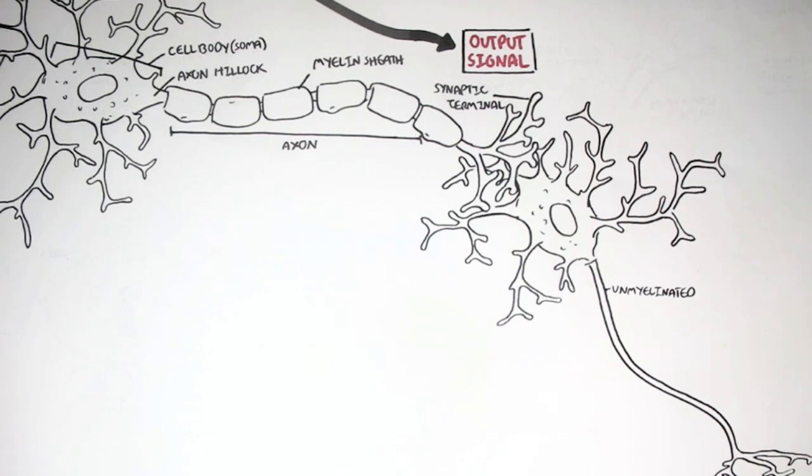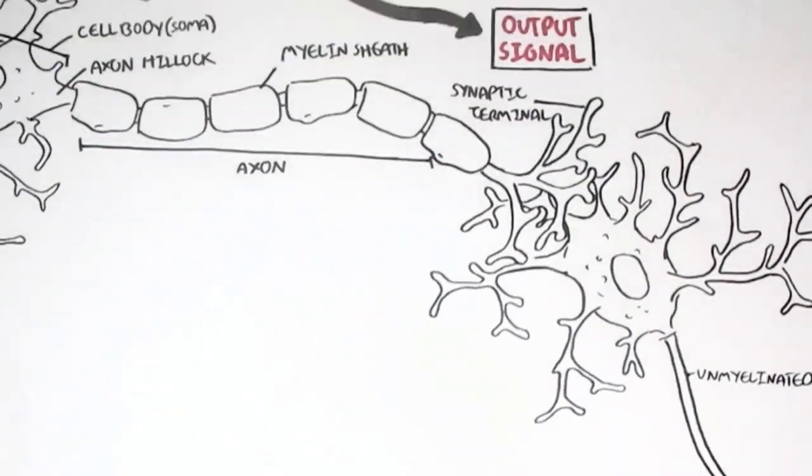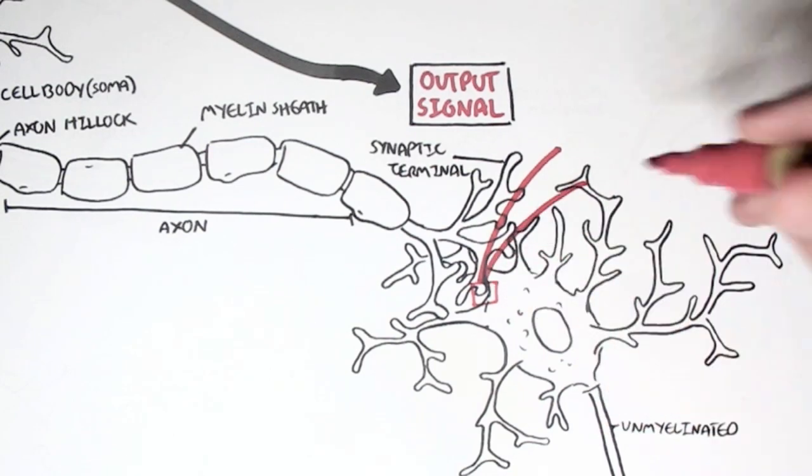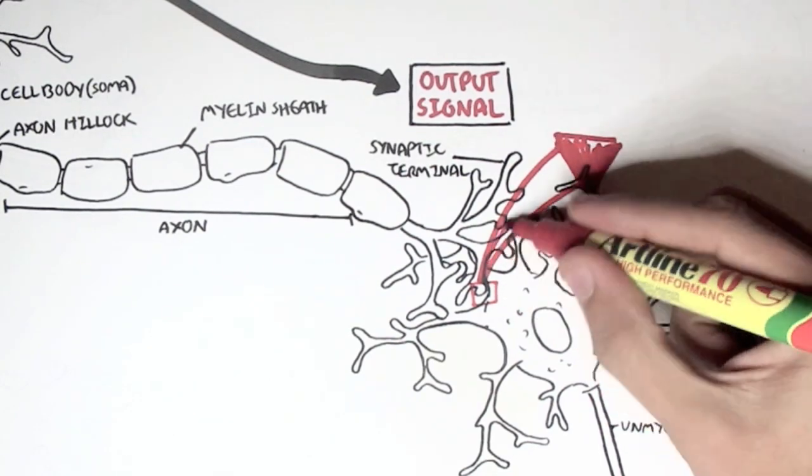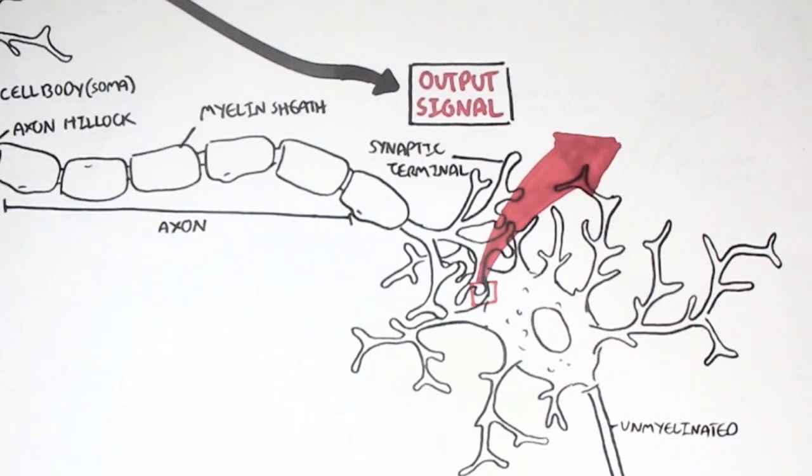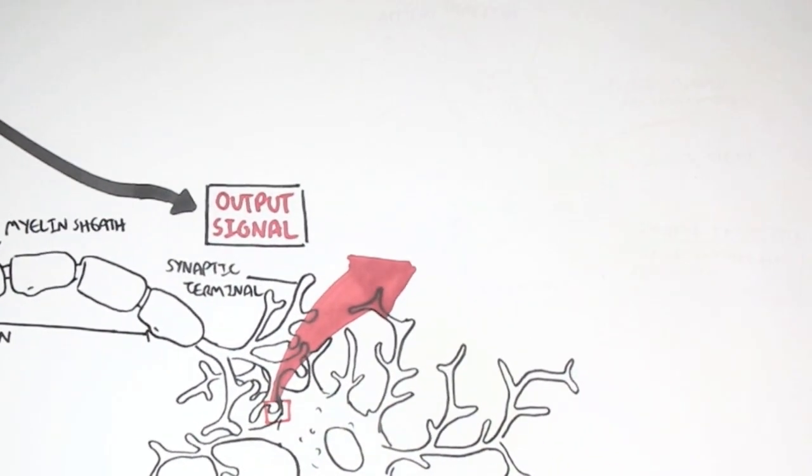When you have a neuron with myelin sheath, the impulse travels much faster. But now you might be asking yourself, how is the information from one cell, from a neuron, passed onto another cell? Well, let's zoom into this area here, where these two cells are close to each other, where they synapse with each other.